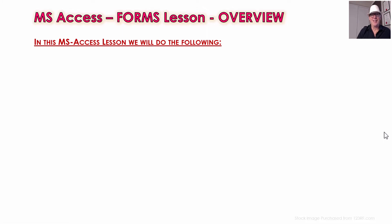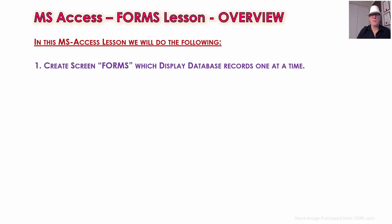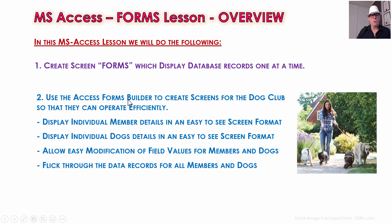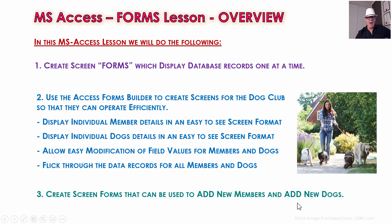In Microsoft Access this lesson we'll do the following: we'll create forms which display database records one at a time, and we'll create screens for the dog club so they can operate more efficiently. We can display individual member details and individual dogs, easily modify values on the form and save the record, flick through data records and browse them. This will free up Juanita, giving her more free time to do dog walking, making it faster and easier to run the dog club. We're also going to add a new member and a new dog at the end of the lesson to prove that the screen forms work.